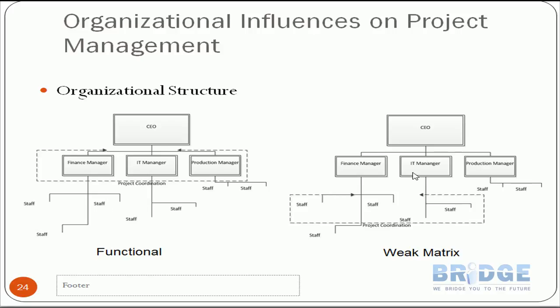Now let's move on to the weak matrix organizational structure. Here, the department heads are relieved from project management efforts, and we pick one capable staff member with some experience to coordinate or expedite the project — called the project coordinator or project expediter. This creates a clear line of responsibility, as people now know where to go for project information.